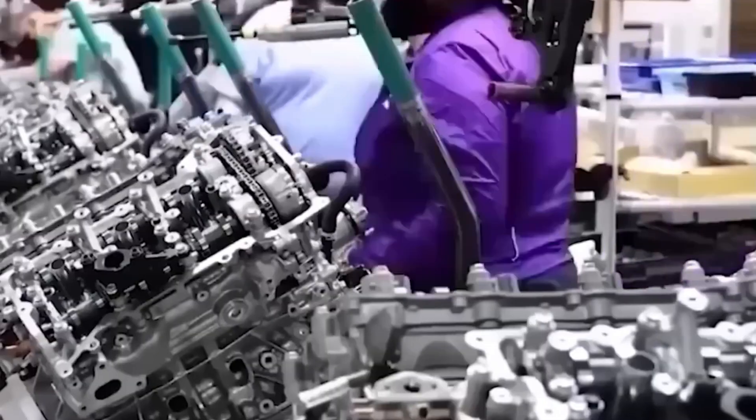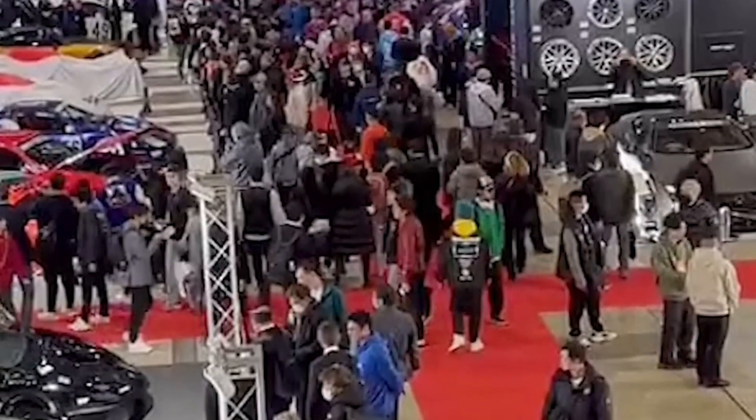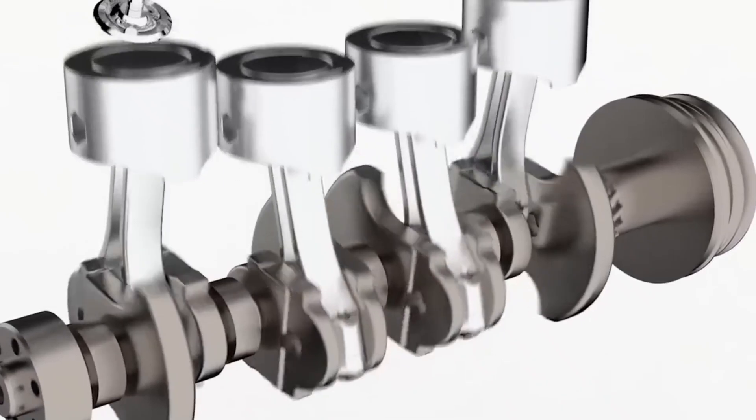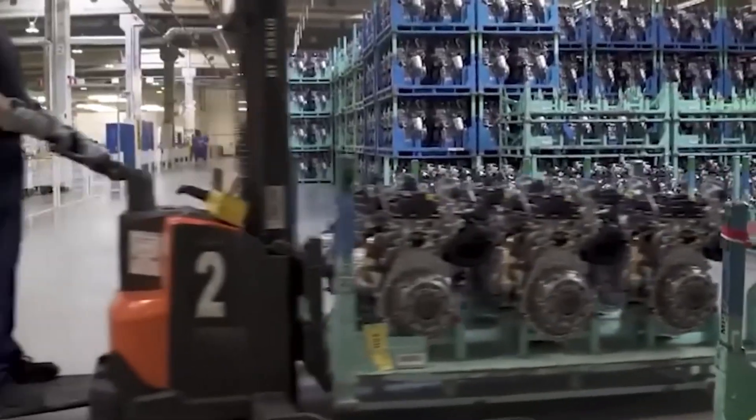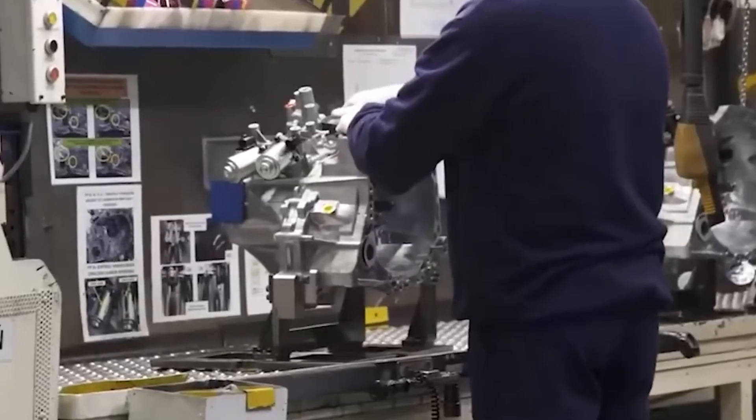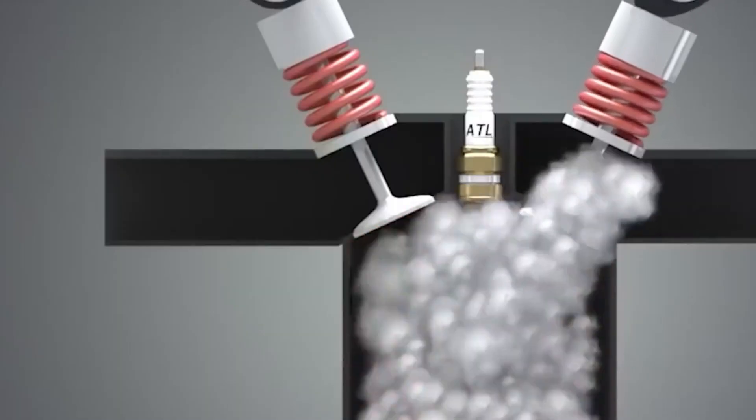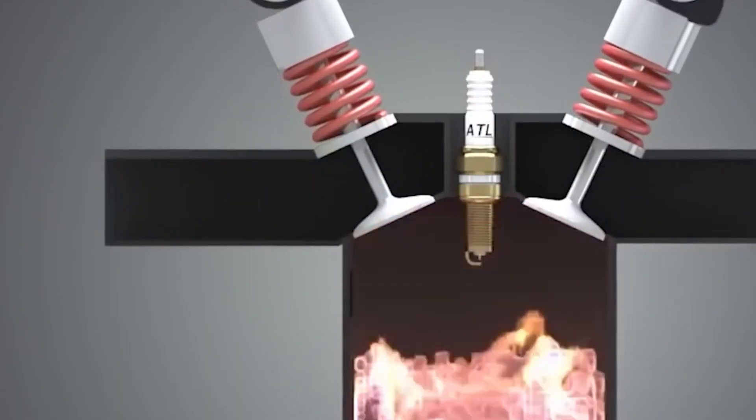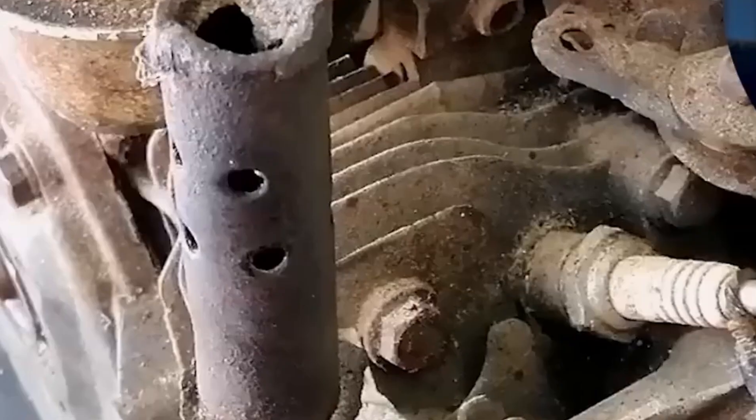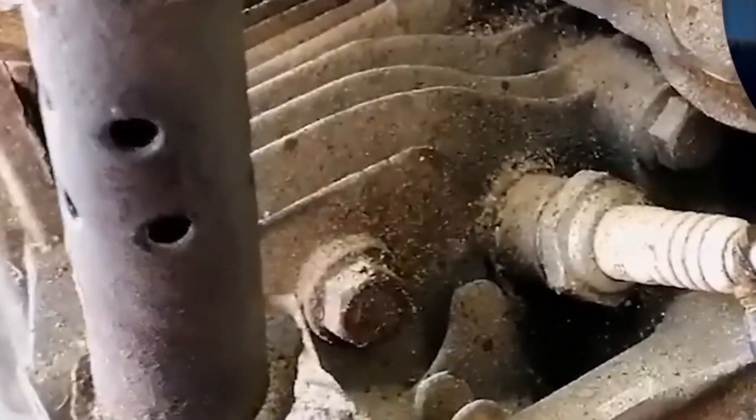The only by-product is water vapor, making it one of the most environmentally-friendly options available. Toyota's move towards carbon neutrality involves a multifaceted approach, combining hydrogen and electric technologies. This strategy acknowledges the limitations of each technology and aims to achieve a balanced and sustainable future.